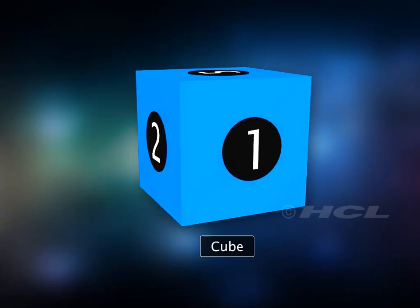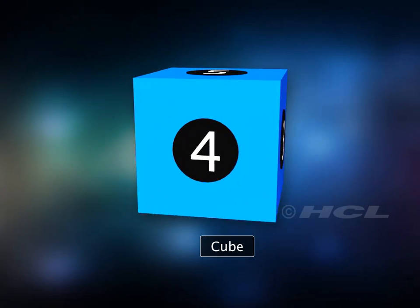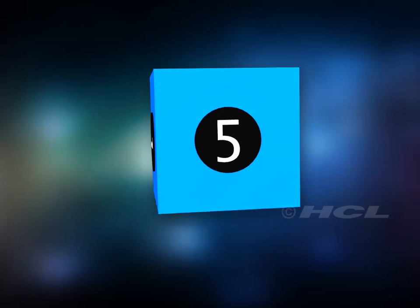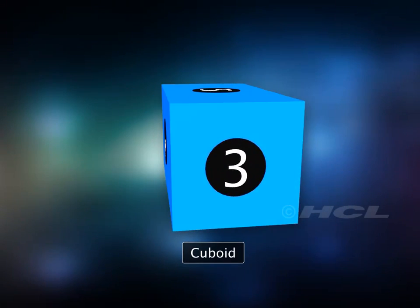A cube has six congruent square faces. A cuboid has six rectangular faces.